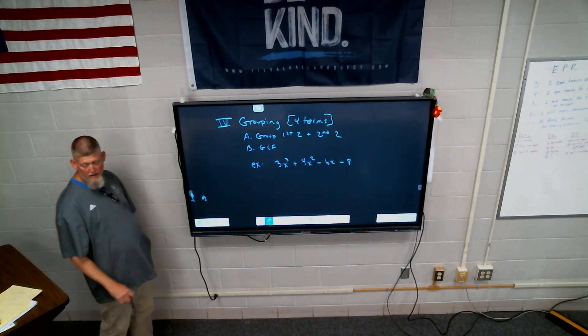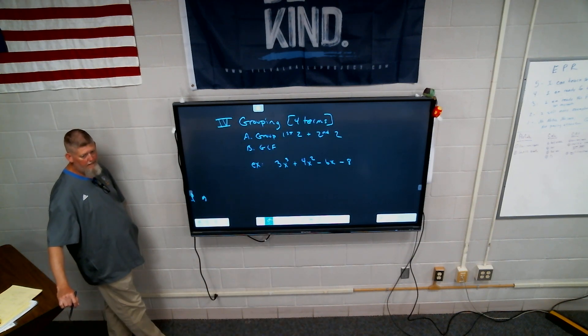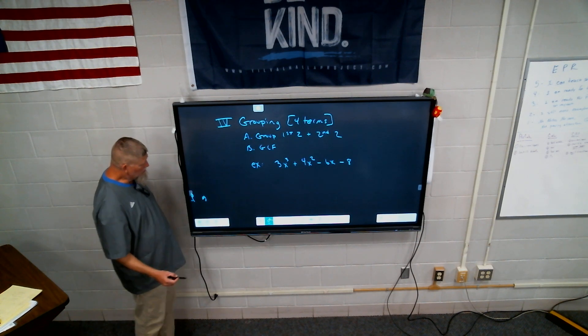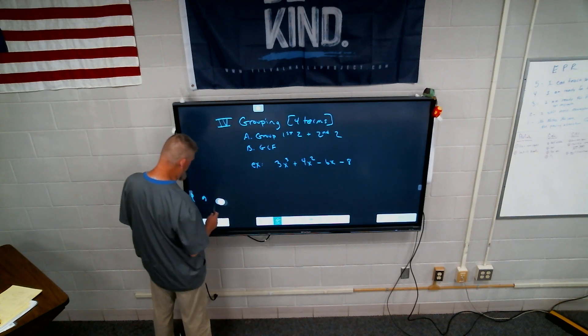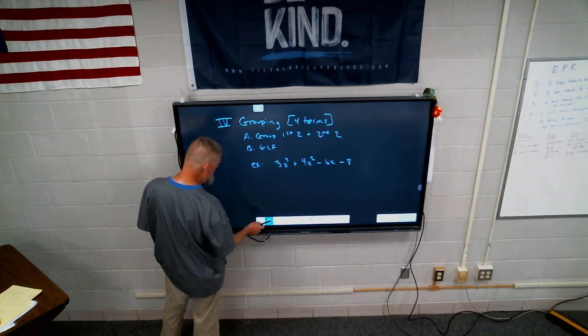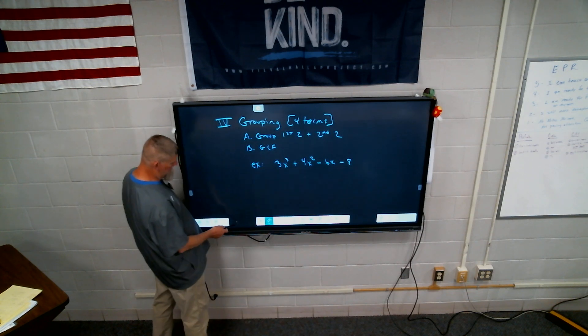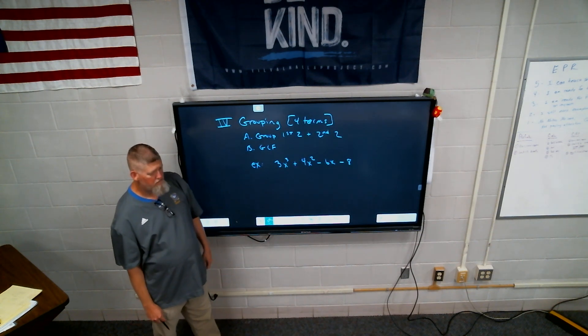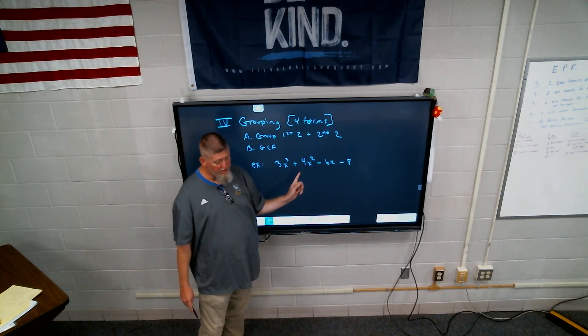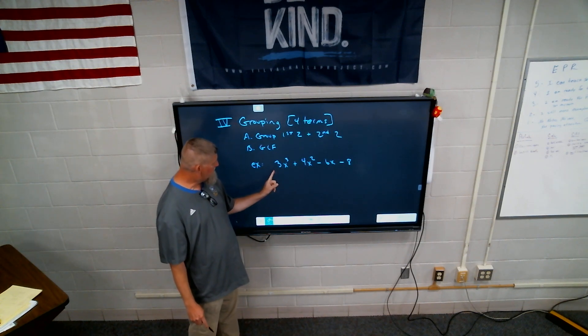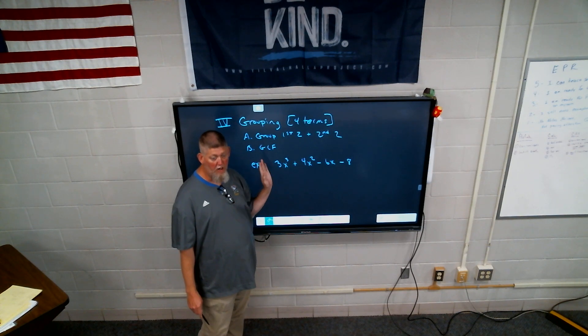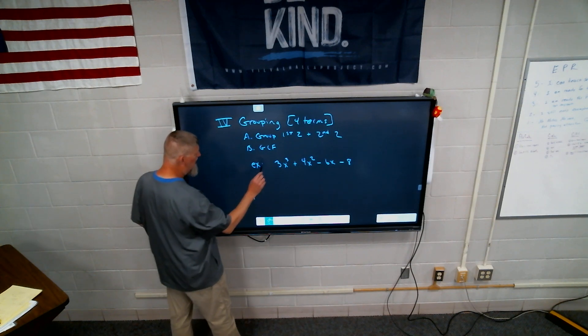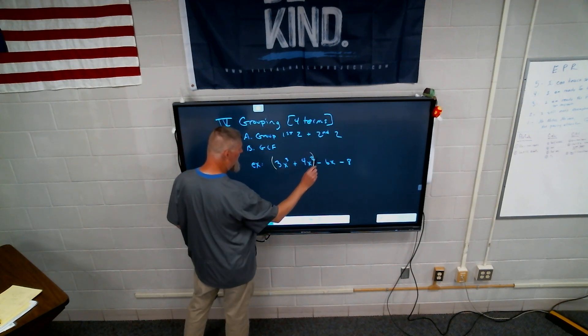And then from there is just the greatest common factor. Let's give an example. 3x cubed plus 4x squared minus 6x minus 8. So what's my first question going to be, class? What is the greatest common factor? Is there a greatest common factor? So is there a greatest common factor among all four? No. So in these three, you have 4, 6, and 8. They're all divisible by 2. The first three, they're all divisible by x. There's nothing among all four. If there was, you have to take it out first. Since there isn't, now let's group up these two and these two.